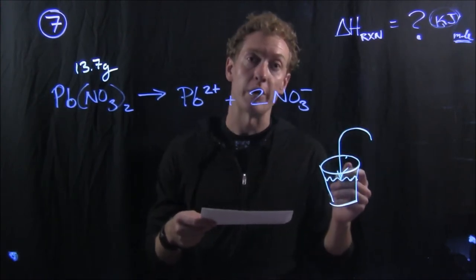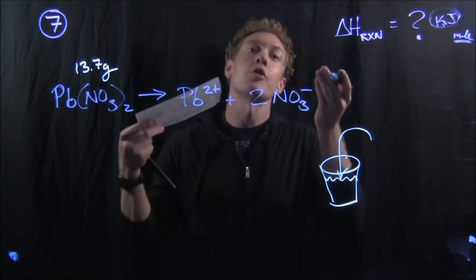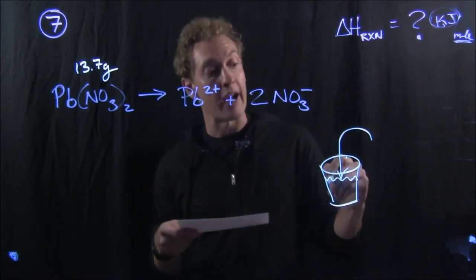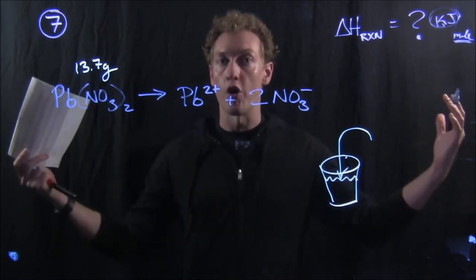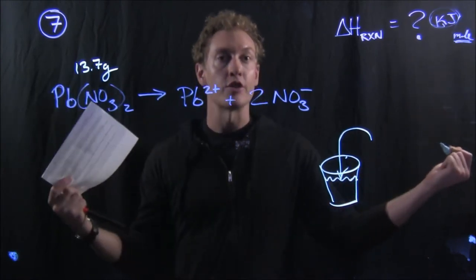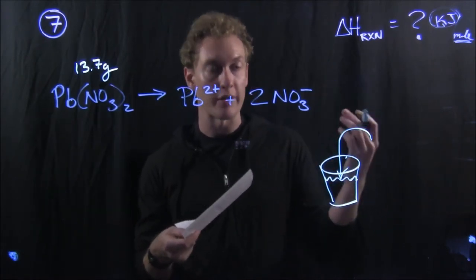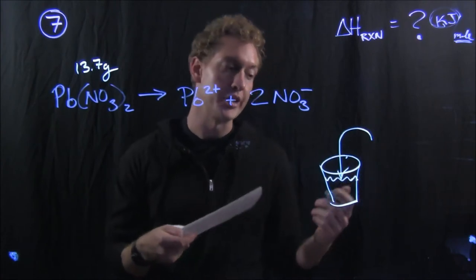So if the reaction would be exothermic, the water is going to absorb that energy that's produced, temperature of the water is going to rise. If the reaction would be endothermic, the water supplies energy from which the reaction can pull, and so as the reaction pulls that energy in, the temperature of the water surrounding it inside the calorimeter will decrease.